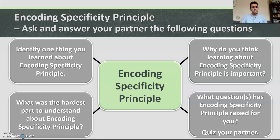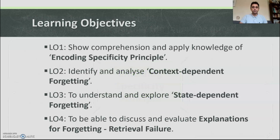That's the encoding specificity principle. Can you identify one thing you've learned about ESP? Why do you think learning about ESP is important? What was the hardest part to understand? What questions has this raised for you? Feel free to put questions in the comments. That's learning objective one done — moving on to learning objective two.